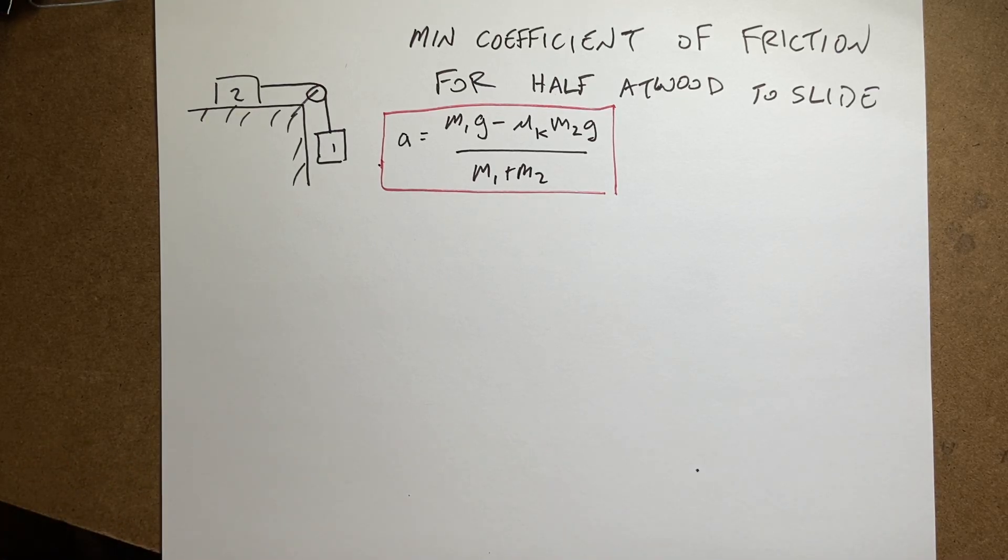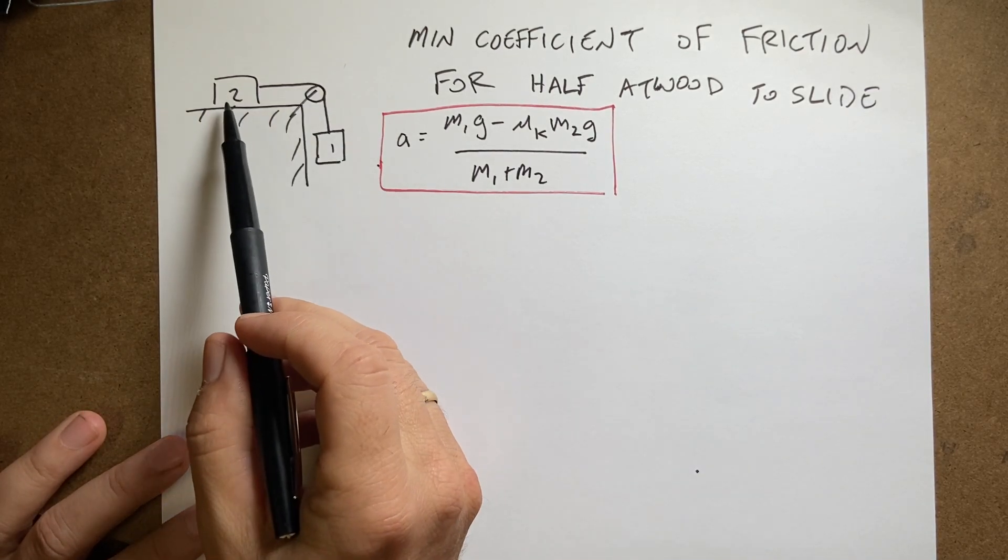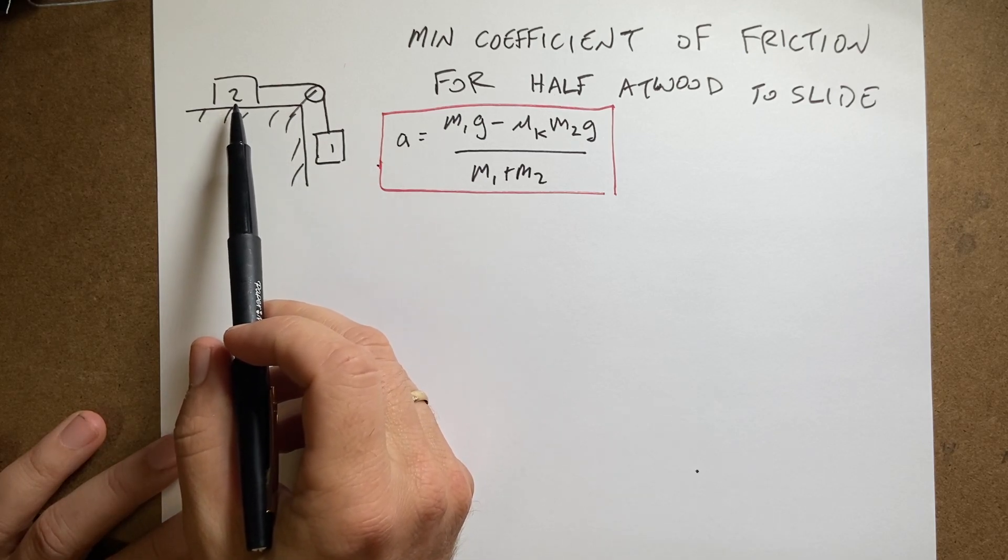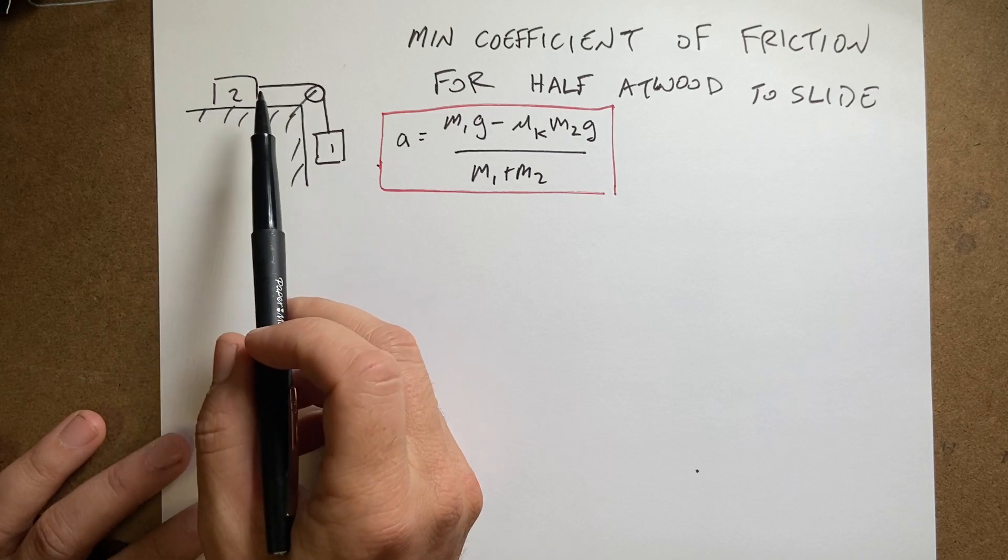Okay, so I'm continuing my Atwood machine series. In this problem I want to look at the half Atwood machine with friction and find out what the minimum coefficient of friction between block number two and the surface is so that the thing starts to slide.